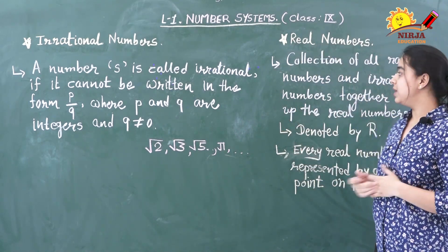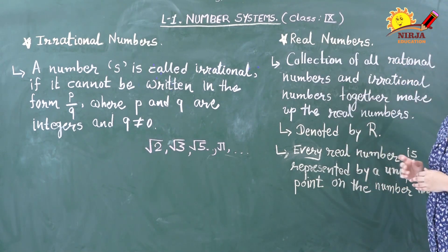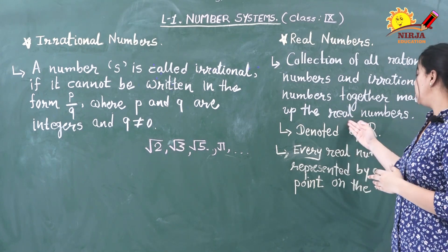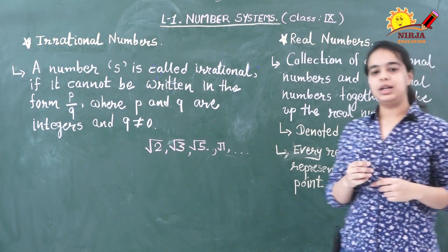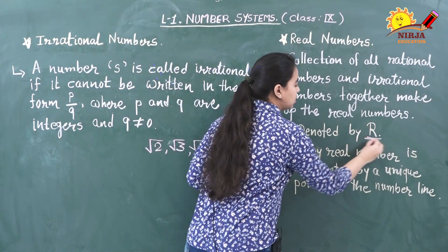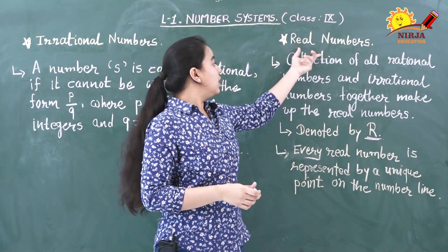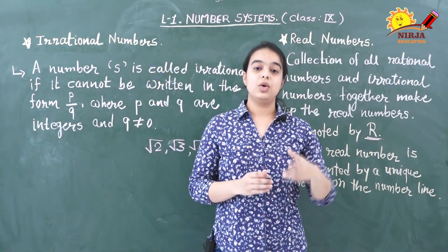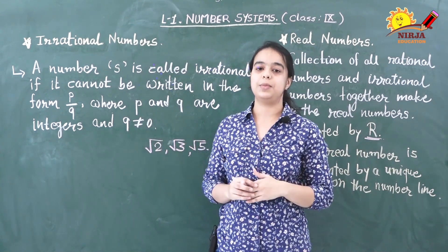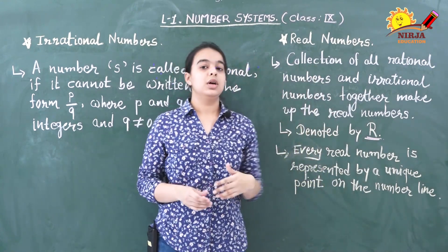So what do we mean by real numbers? The collection of all rational numbers and irrational numbers is called real numbers. To denote real numbers you can use the symbol R. Because you have a whole separate chapter on real numbers in your class 10 named 'Real Numbers'.